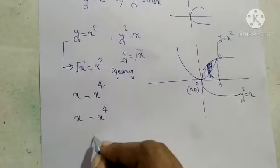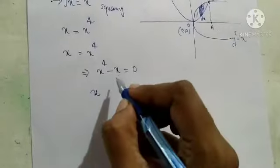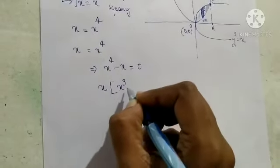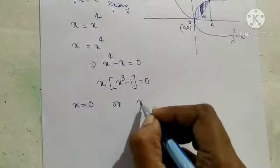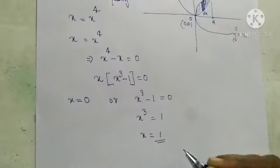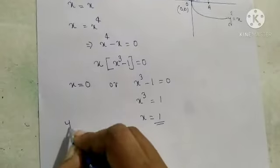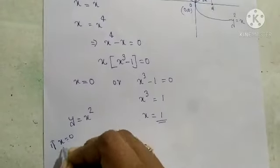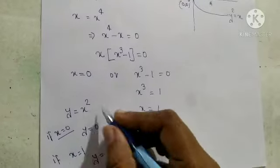Taking x to the right-hand side, it becomes x raised to 4 minus x equal to 0. Taking x outside, we get x into x cube minus 1 equal to 0. From this we get x equal to 0 or x cube minus 1 equal to 0, so x cube equal to 1, giving x equal to 1. Using y equal to x square: if x equal to 0, y becomes 0; if x equal to 1, y becomes 1 squared, that means 1.